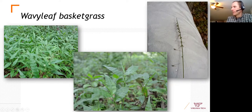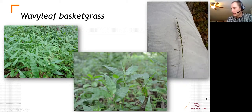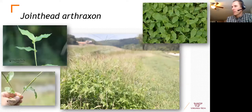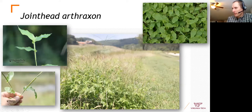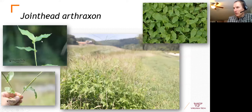Jointhead arthraxon is another warm-season summer annual grass appearing more frequently in questions. It generally prefers more open, sunny areas and has a spike-type seed head that is purplish-red — distinct from the large crabgrass seed head it might be confused with. It also has somewhat wavy leaves, though the seed head is very different.